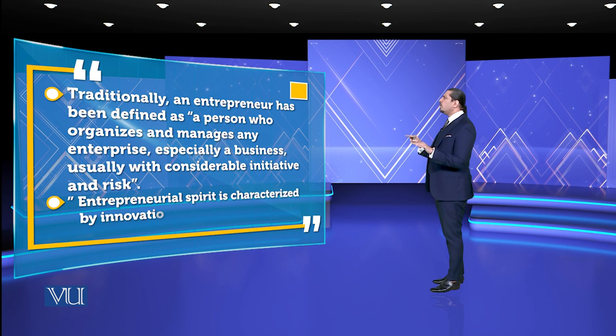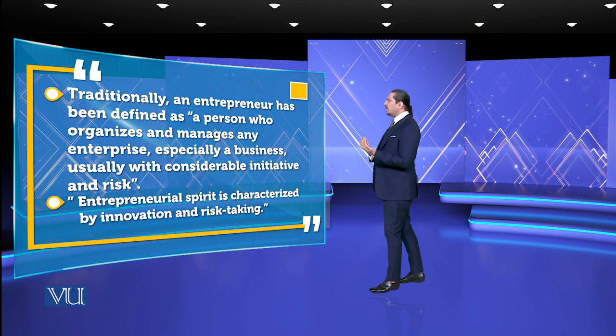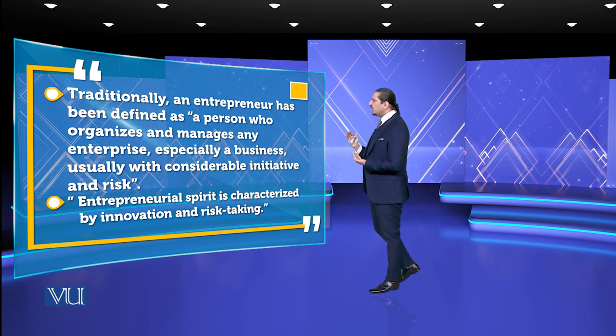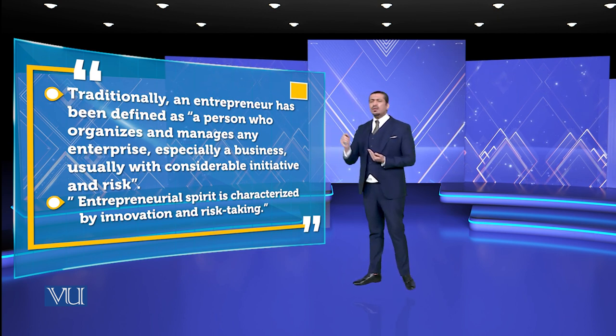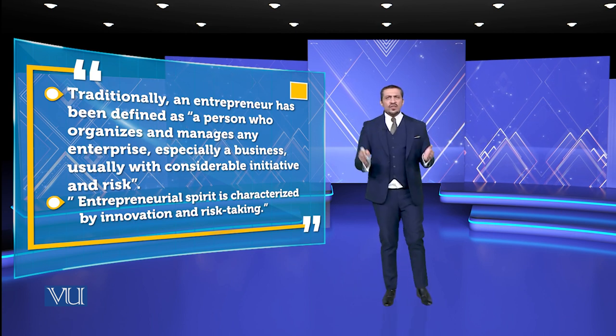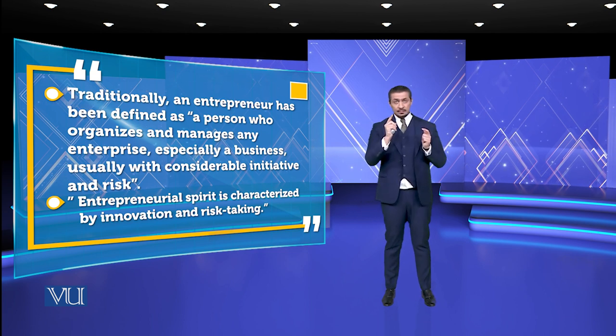Traditionally, an entrepreneur has been defined as a person who organizes and manages any enterprise — especially a business — usually with considerable initiative and risk. The last key element is risk-taking. Entrepreneurial spirit is characterized by a set of risk-taking — but mitigated risk. Mitigated risk: Elon Musk failed twice in space ventures before succeeding the third time, because he came up with the idea of calculated risk.